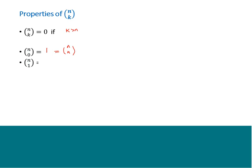N choose 1 is always N — you have N objects and select exactly one. This is also the same as N choose (N-1): select everybody except one of them. This connects to the heads-tails problem where you can either select it or not select it. N choose 2 turns out to be N times (N-1) divided by 2. Weirdly, this equals 1 plus 2 plus 3 plus dot-dot-dot plus (N-1).